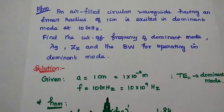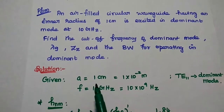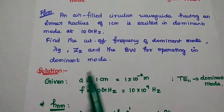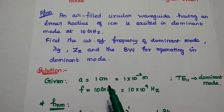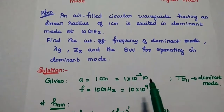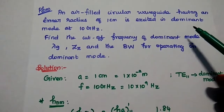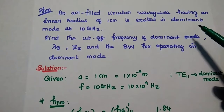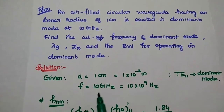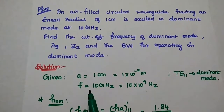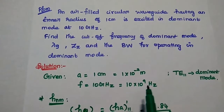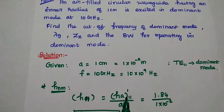In the solution part, first we have to write the given data. The inner radius is given as 1 cm, which can be written as 1 × 10⁻² m. The dominant mode means TE11 mode, and the operating frequency is 10 GHz, that is equal to 10 × 10⁹ Hz.